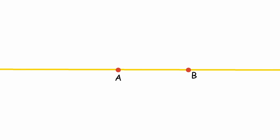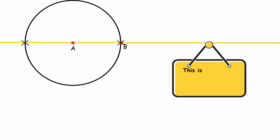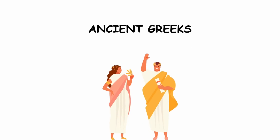Given any set of points already drawn on the paper to begin with, you can connect two points with a line, draw a circle centered at one point and passing through the other, and mark the points where paths you draw intersect. That's it. This is known as a straightedge and compass construction, first considered by the ancient Greeks.